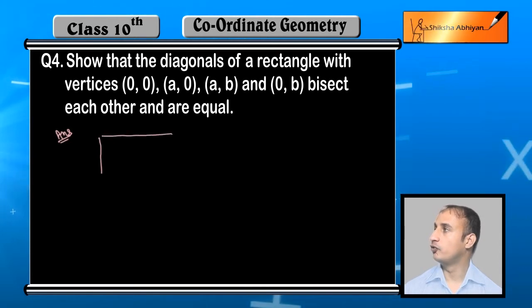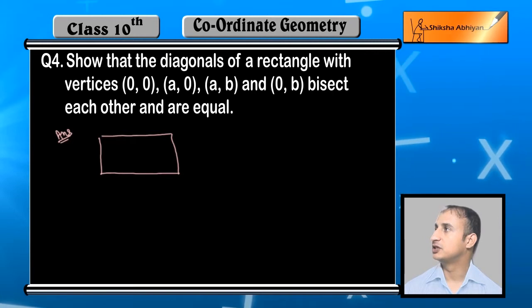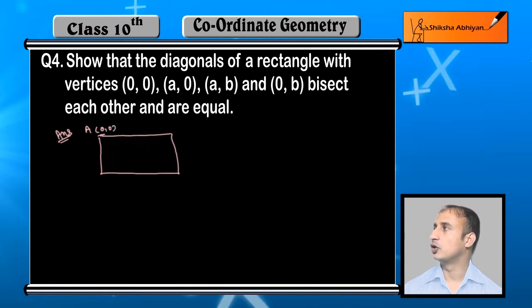These vertices form a rectangle, so I'll draw the rectangle. This is point A, and this point is (0,0). The point B is (a,0). In order, the points are C (a,b) and D (0,b).